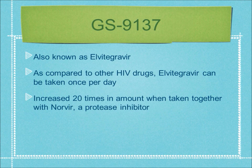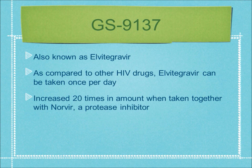Next, we will cover Elvitegravir, also known as GS9137. Compared to other HIV drugs, Elvitegravir can be taken once per day. This inhibitor is made by Gilead and, similar to Raltegravir, it is safe, effective, and well tolerated. Clinical trials have shown it is effective with once-daily dosing, improving patient compliance, as other HIV drugs require multi-dose per day therapies. Surprisingly, when taken with a protease inhibitor, it produces a 24% increased amount of Elvitegravir, increasing effectiveness. It is also proven to be more effective when taken with food.